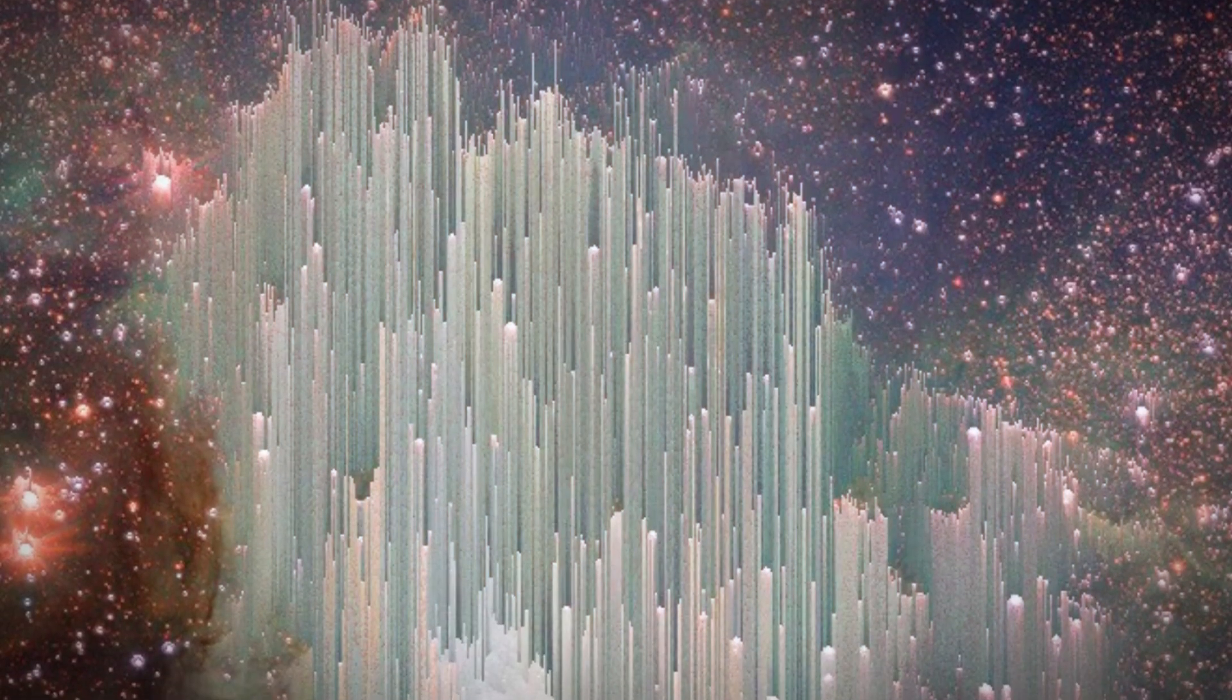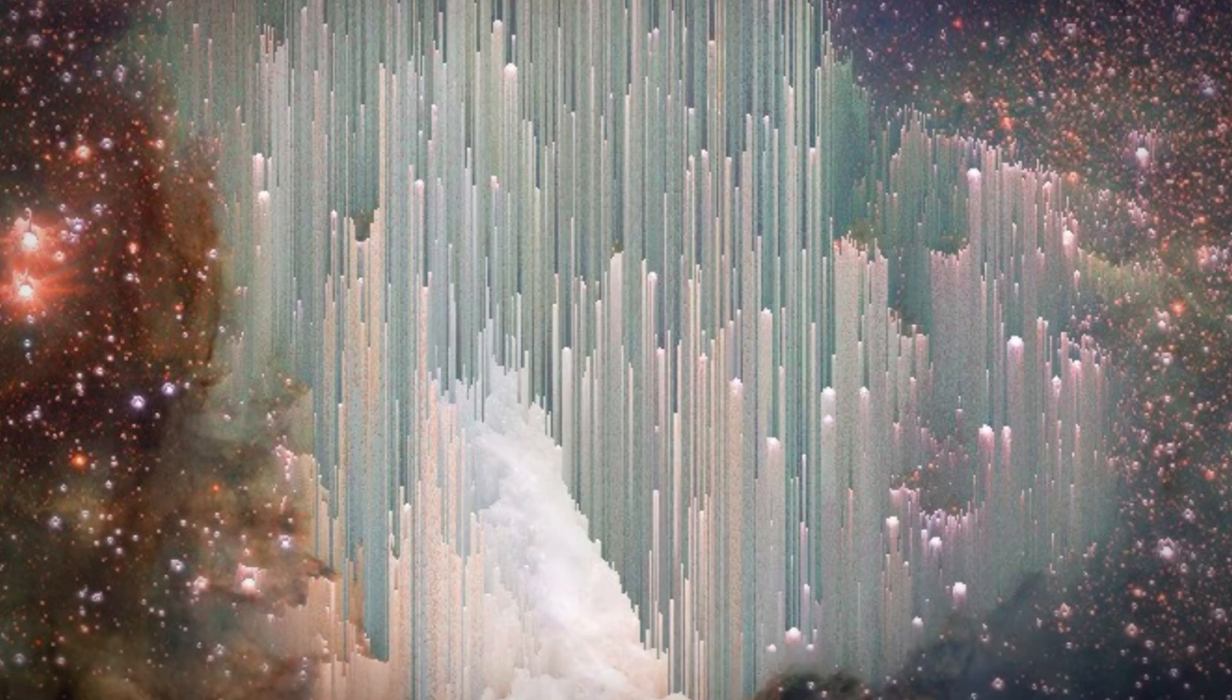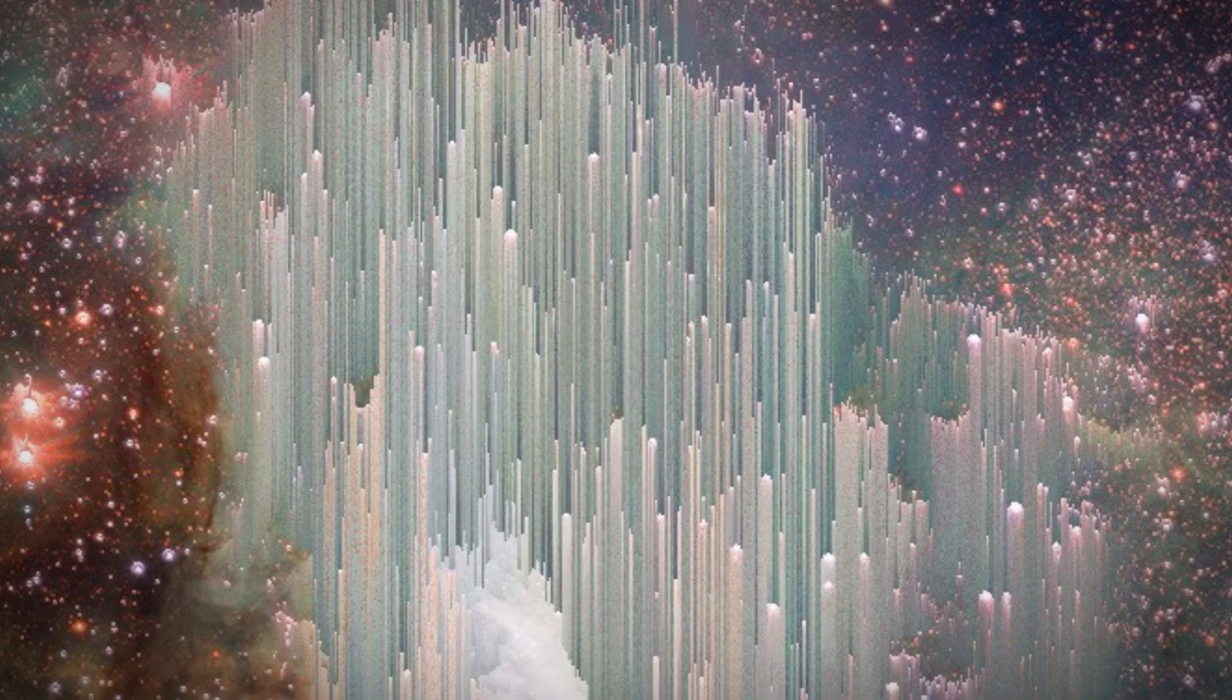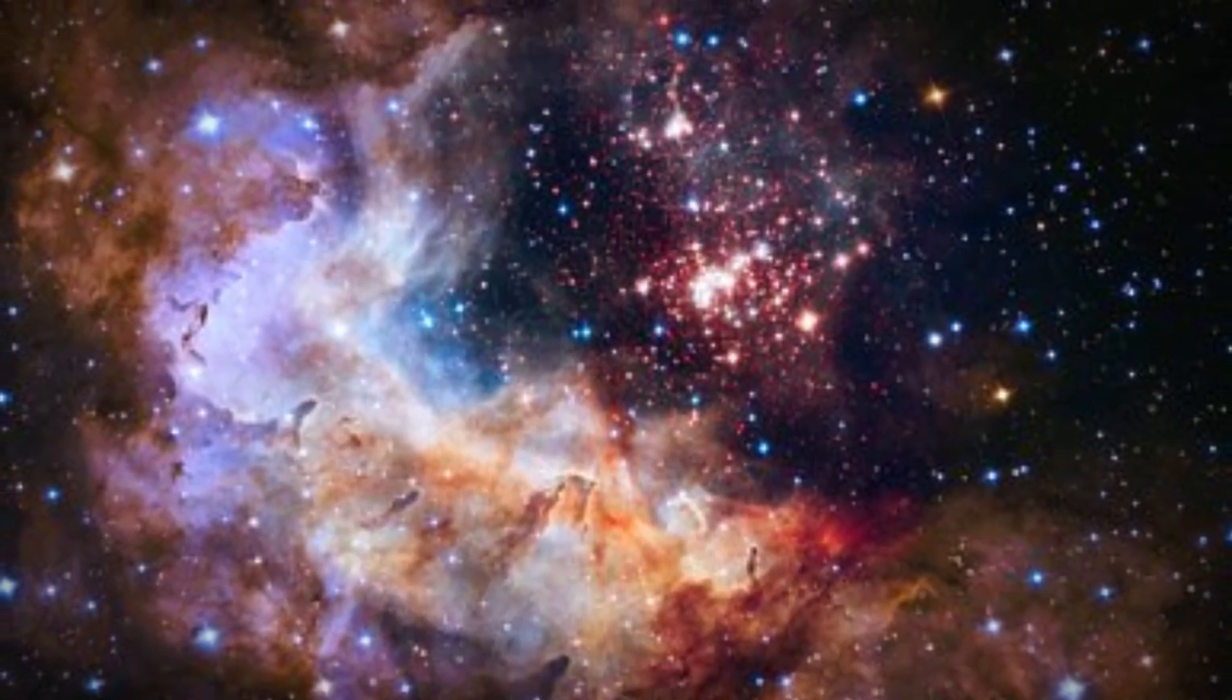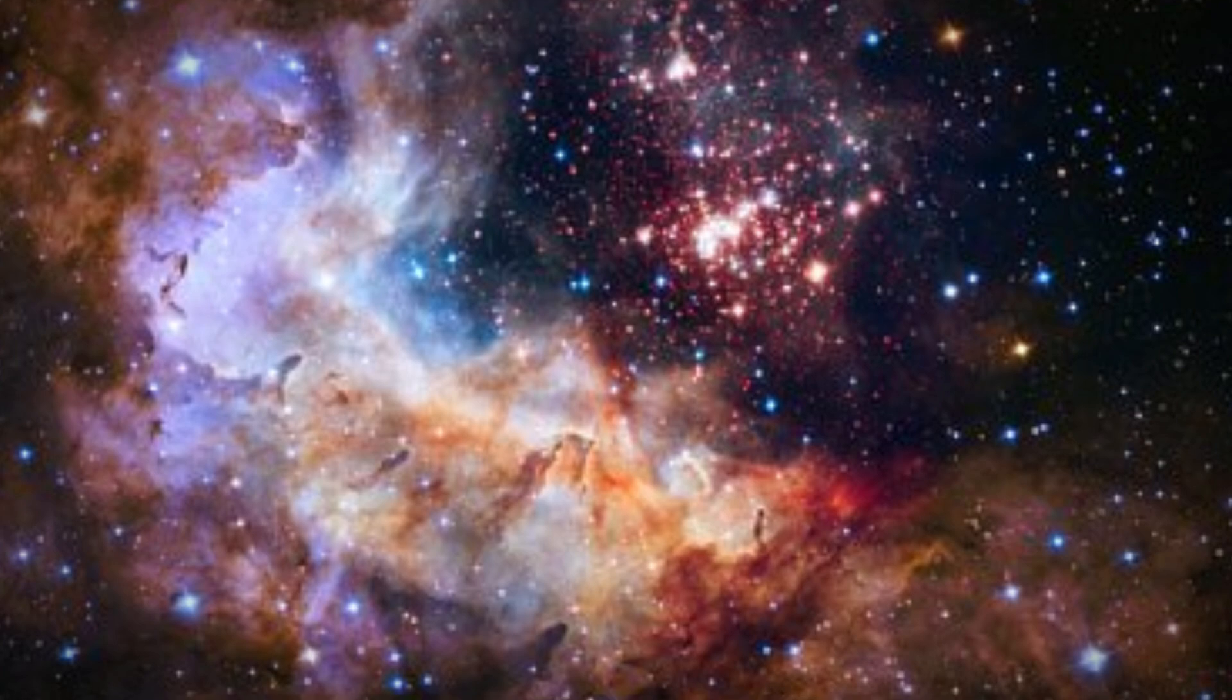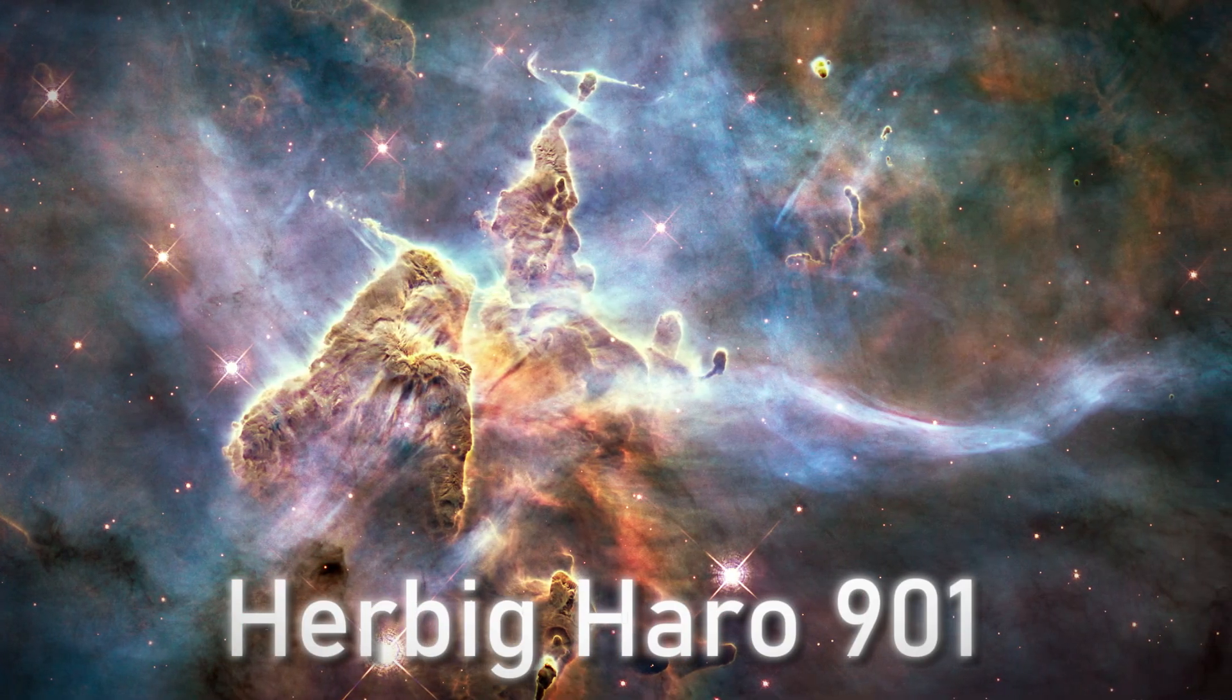The image of a nebula with a gate-like structure has been circulating online, claiming to show the gates of heaven. But this image is not a genuine photograph of a cosmic phenomenon. It is actually a digital artwork that was manipulated from a real Hubble image of a nebula, and the original image has nothing to do with heaven or religion. It is a scientific image of a fascinating object in our galaxy called Herbig-Haro 901.